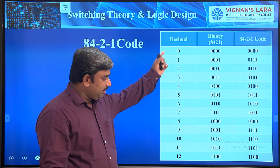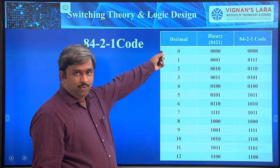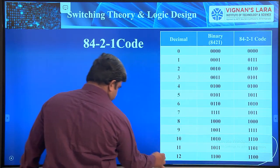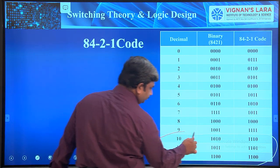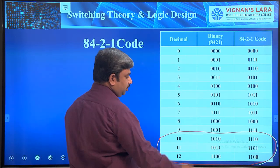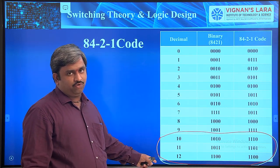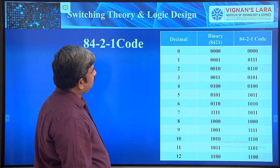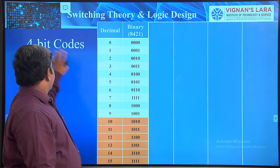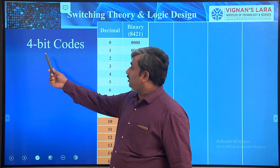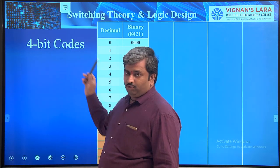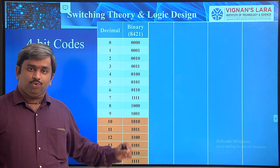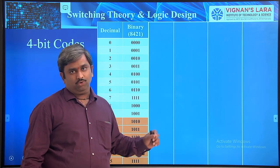Looking at the chart, I have given the values for 8, 4, -2, -1 code representing 0 to 12. But we are considering 0 to 9 only. The chart shows all four codes: BCD (8421), XS3, 2421, and 84-2-1.